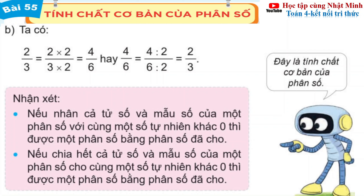Hay 4 phần 6 bằng: 4 chia cho 2 bằng 2, và 6 chia cho 2 bằng 3. Chúng ta được 2 phần 3.